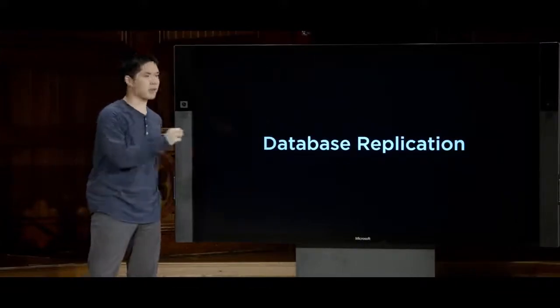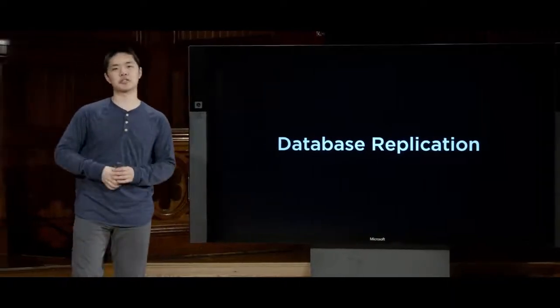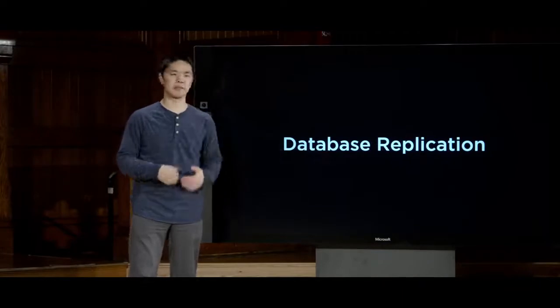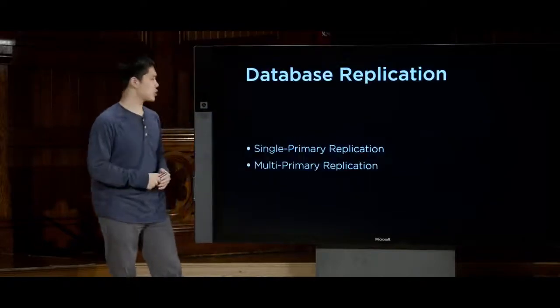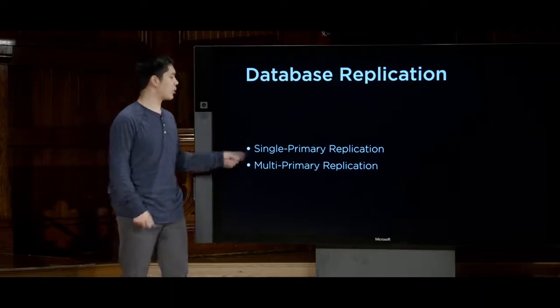Database partitioning can help with scale by making searches faster, but having multiple servers connected to a single database still represents a single point of failure — if the database fails, the entire web application stops working. To address this, we can use database replication: rather than just one database, we maintain multiple databases, reducing the likelihood of complete application failure. Two common approaches are single primary replication and multi-primary replication.